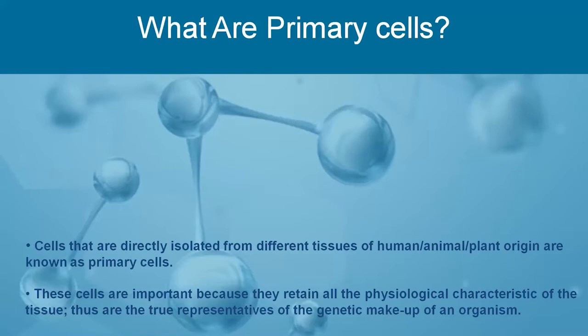When we talk about primary cells, two basic questions pop up in our mind: what exactly are the primary cells? Some of you might get confused with primary cells and cell lines. Primary cells are cells that are directly isolated from different tissues of human, animal, or plant origin, whereas cell lines are continuous cell lines that are already isolated and go beyond fixed passages. This is the basic difference between primary cells and cell lines.